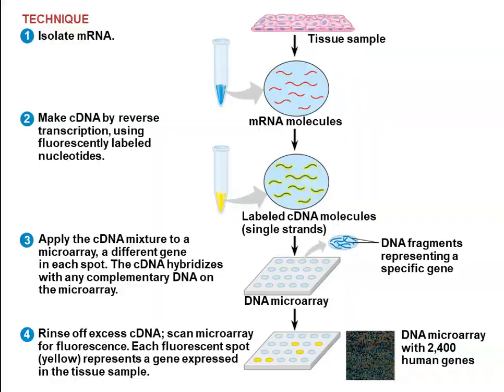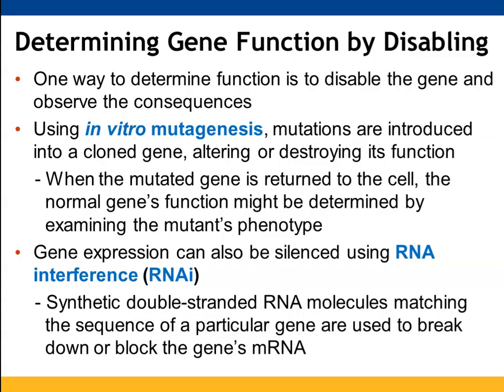Another way to examine gene function is through knockouts — disabling the gene and observing the impact. Mutations are introduced through in vitro mutagenesis, either destroying or altering gene function, and the altered gene is put back in the cell to observe how the organism functions. We can also use RNA interference, which binds to the mRNA produced from a gene and either prevents it from undergoing translation or breaks down the mRNA altogether.